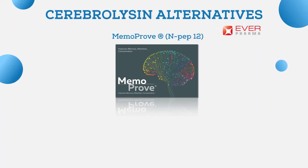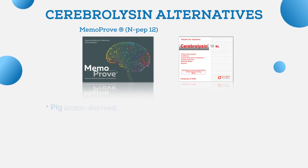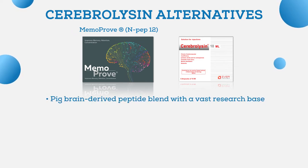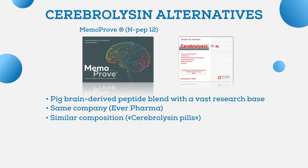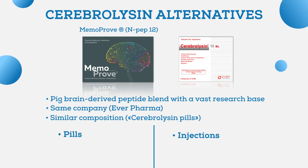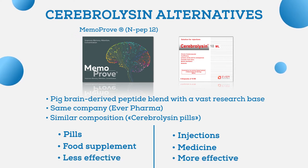Another alternative to Cerebrolysin is MemoProve (also called N-PEP-12), which is actually produced by the same company — Ever Pharma. MemoProve is a pig brain-derived peptide blend with a vast research base, and its composition is very similar to Cerebrolysin. Some people even call MemoProve 'Cerebrolysin pills.' It is a good option for those unwilling to take injections, but please note that MemoProve is a food supplement — it is not designed to treat any disease and is less effective compared to Cerebrolysin.